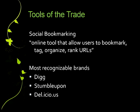And finally, there's social bookmarking. Social bookmarking is an online tool that allows users to bookmark, tag, rank, organize, and rank URLs. For most people, this is not as important. But if you happen to be a major content provider and search engine optimization is an important part of your marketing strategy, social bookmarking is definitely very important. It allows people to rank the importance of the content you're providing. The most recognizable brands include Digg, StumbleUpon, Delicious, Reddit — there's a ton of them out there.